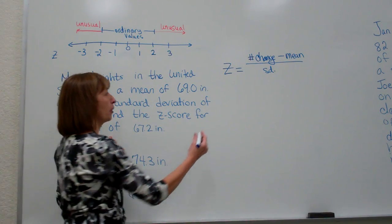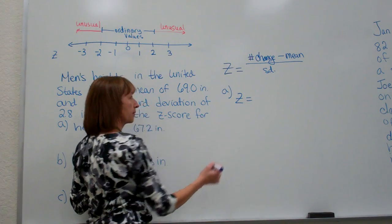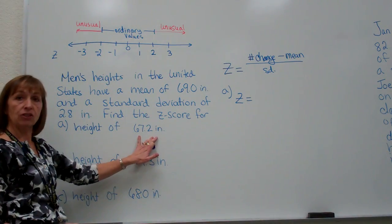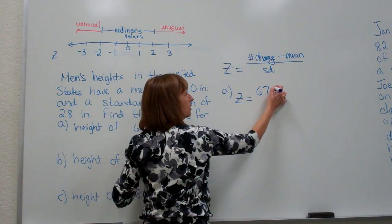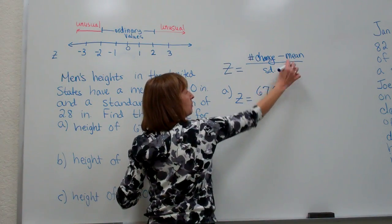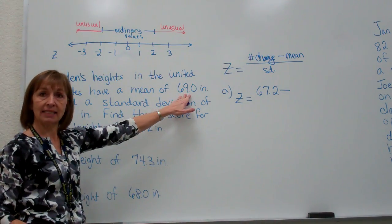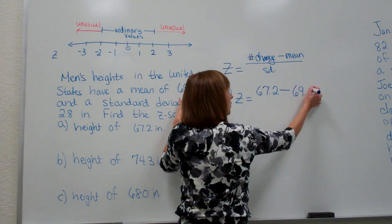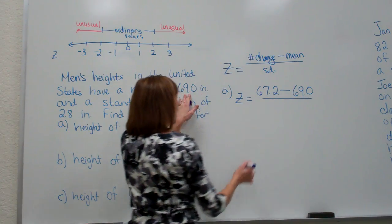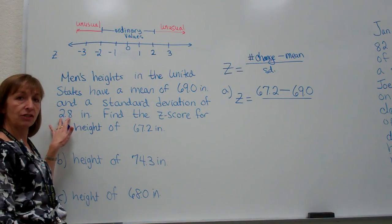For part A, our number we want to change is 67.2 inches. So we have 67.2 minus the mean of the distribution, which is 69.0, divided by the standard deviation of our data, which is 2.8.